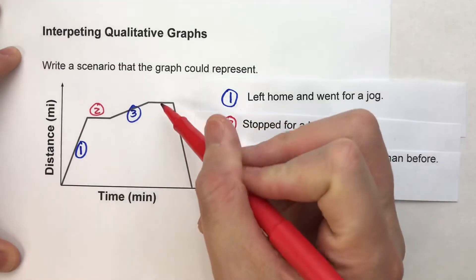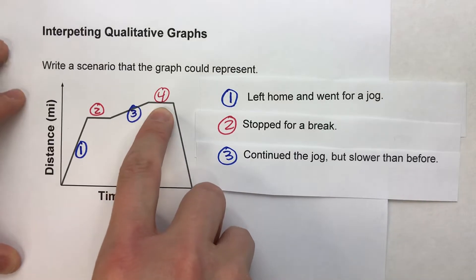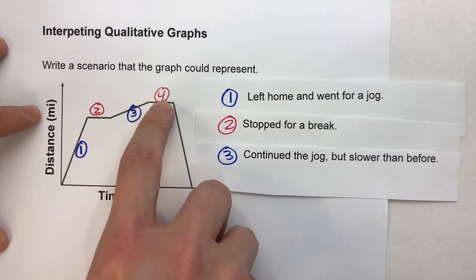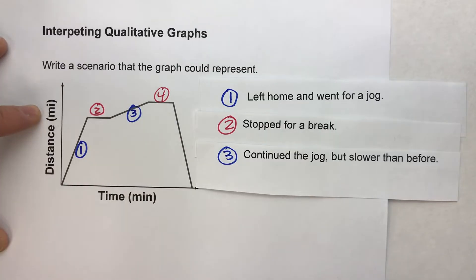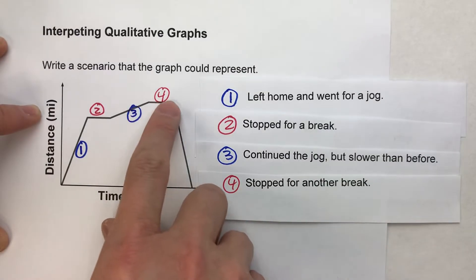That leads us to the fourth interval right here and again notice that fourth interval is flat. So again we're not making any distance right here. So for some reason or another we stopped. So we can say for that fourth section we stopped and took another break right there.